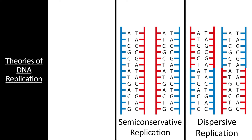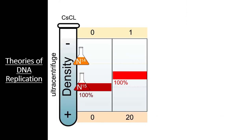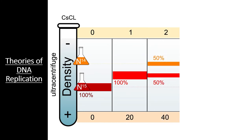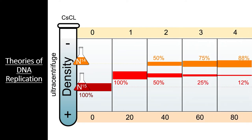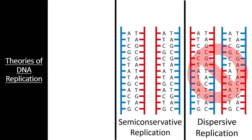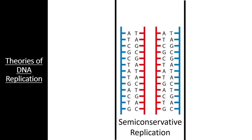To determine which of the other two hypotheses were correct, researchers had to continue the experiment. When researchers allowed the bacteria to reproduce a second time, they found two distinct bands: one entirely light and the other intermediate. Continuing for several more generations, the percentage of intermediate DNA slowly decreased until only nitrogen-14 DNA was left. Since the second generation had an entirely lightweight band of DNA, dispersive replication was also ruled out, as it would have only ever produced one band that slowly became closer to lightweight over time. Therefore, Meselson and Stahl were able to show conclusively that DNA replication is a semi-conservative process.